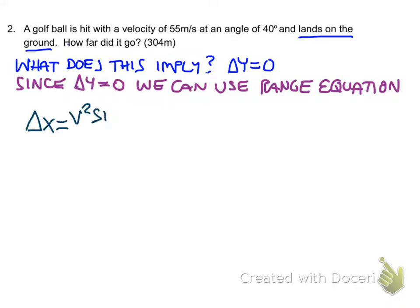And that says that delta x equals v squared sine 2 theta over g. That 2 theta means it's going to be the sine of twice whatever angle you're using.